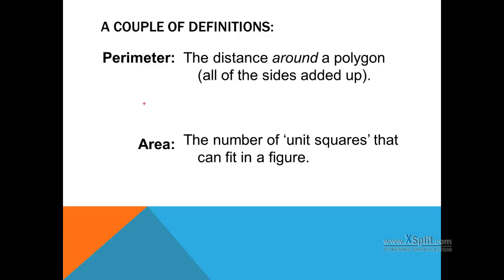Area is going to be the number of little squares, of square units you can fit into an object. For example, let me show you here. If we have a rectangle, and the rectangle is 7 by 3. In other words, there are three different rectangles that we can fit in this direction, and seven that we can fit in this direction.